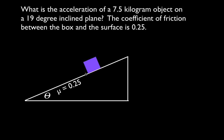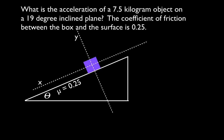I drew a diagram with an inclined plane and put the angle in — this is 19 degrees above the horizontal. There's the object, with a coefficient of friction of 0.25. The next thing I do is draw in my x-axis, which is parallel to the inclined plane, and my y-axis, which is perpendicular to that.